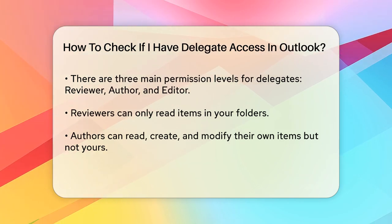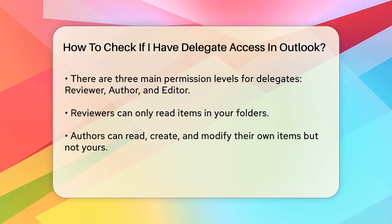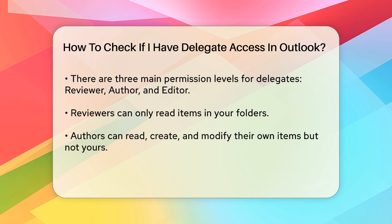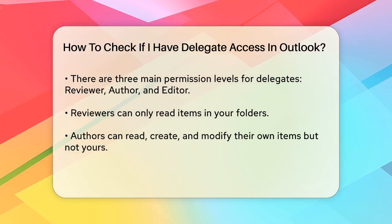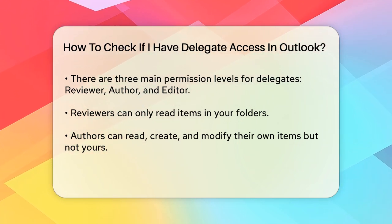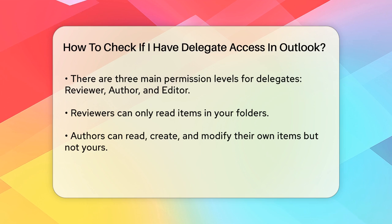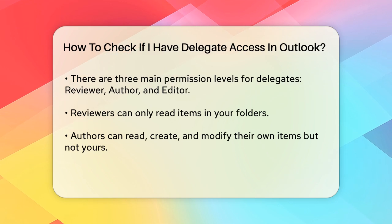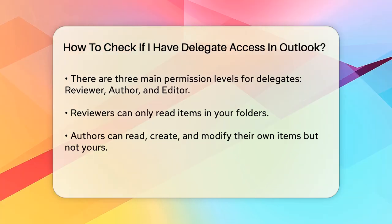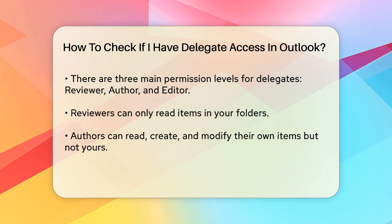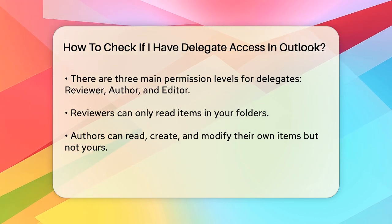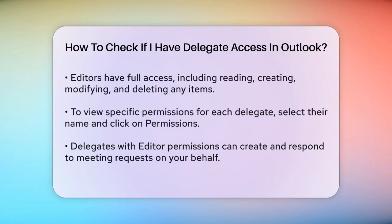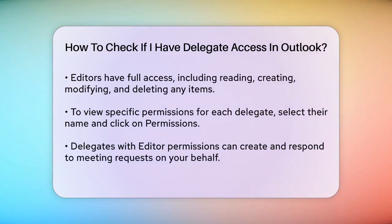Now, let's look at the different levels of permissions you might see. There are three main types — reviewer, author, and editor. A reviewer can only read items in your folders. An author can read, create, and modify items they created but not items you created. An editor has the most access and can read, create, modify, and delete any items, including those you created.